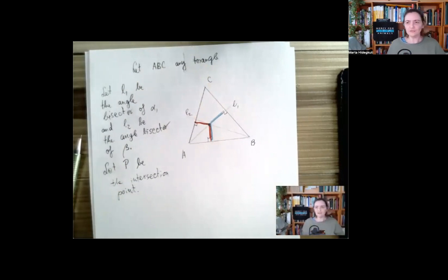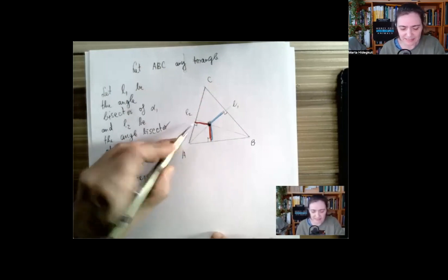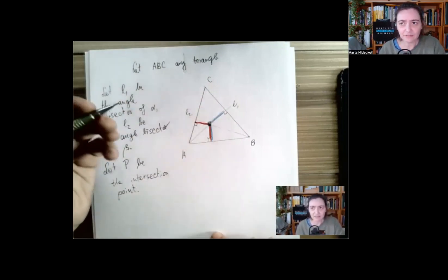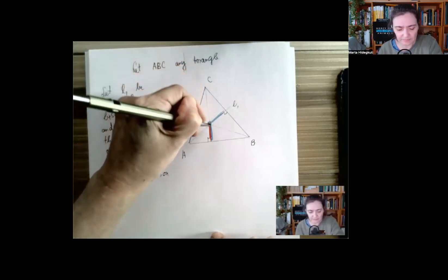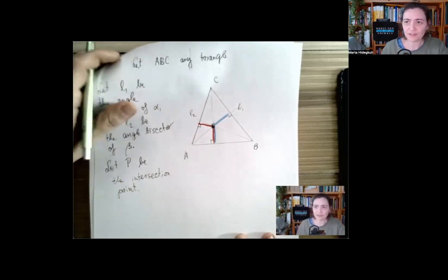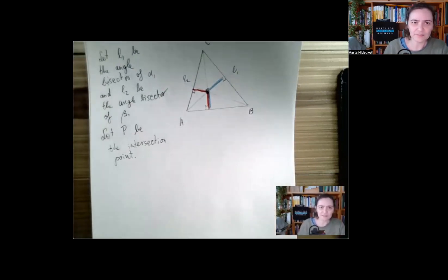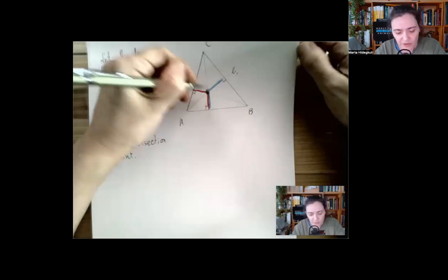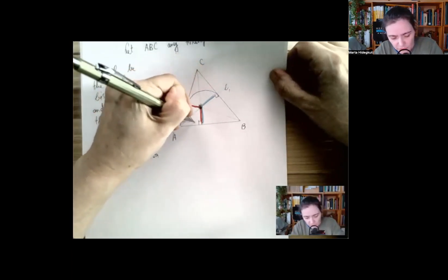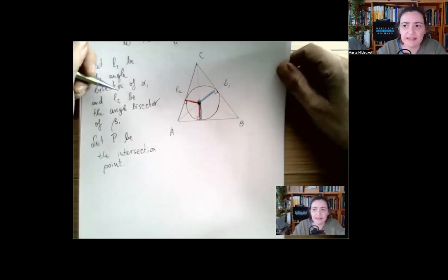Now you see all three of these distances are equal to each other, and they're perpendicular to the sides. One immediate consequence: if this point is equally far from side AC and side BC, then it also sits on the third angle bisector. So the angle bisectors all intersect in a single point, similarly to the perpendicular bisectors. This point is the center of the inscribed circle — a circle to which all three sides are tangent.